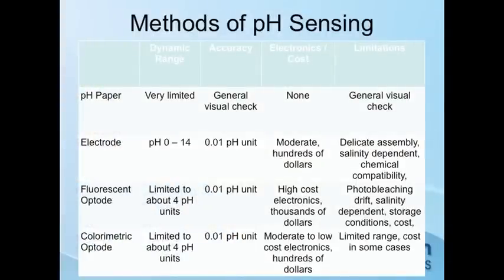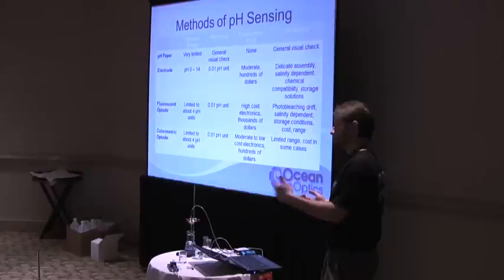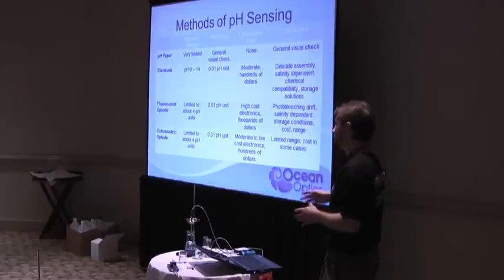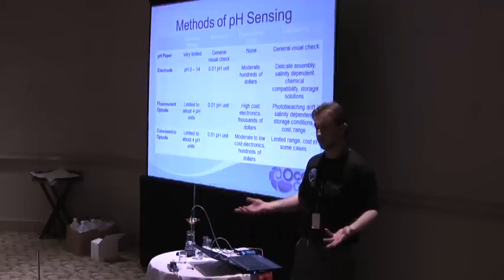A big limitation of fluorescent optodes is photobleaching drift — they're really not good for long-term measurements because they bleach out the same way ruthenium sensors do over time. Storage is also an issue if they're exposed to light. The colorimetric method overcomes photobleaching, but its main drawback is sensitivity to color effects, turbidity, and ambient light. With fluorescent, you look at phase shift and don't have those environmental influences. With colorimetric, they do interfere — for example, this dip probe stuck in mud won't get any signal, so it's not suitable for soil analysis.